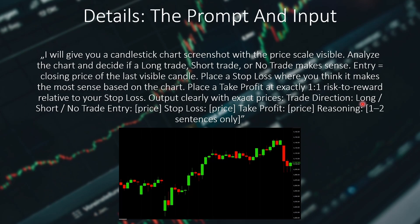Now let's talk about the details — specifically the prompt I will use. I designed a very simple prompt, and I'm sure it can be made better, but for this test I just wanted to keep it as simple as possible. It reads: I will give you a candlestick chart screenshot with the price scale visible. Analyze the chart and decide if a long trade, short trade, or no trade makes the most sense. Entry equals the closing price of the last visible candle. Place a stop loss where you think it makes the most sense based on the chart. Place a take profit at exactly a 1 to 1 risk to reward ratio relative to your stop loss. I decided to go with a 1 to 1 risk to reward ratio because with that ratio there is always a 50% chance of hitting the take profit and a 50% chance of hitting the stop loss first.